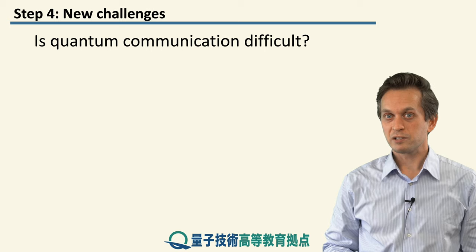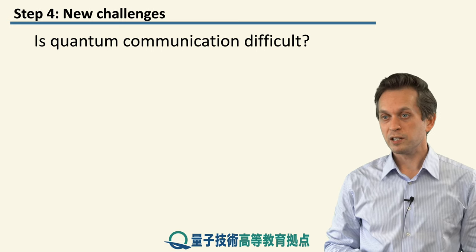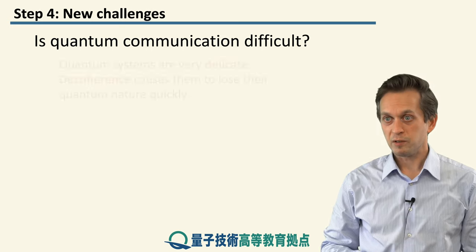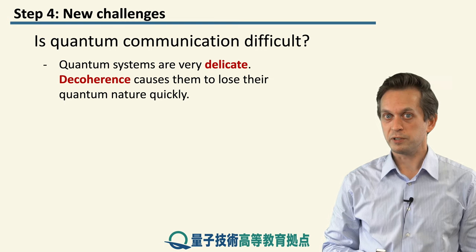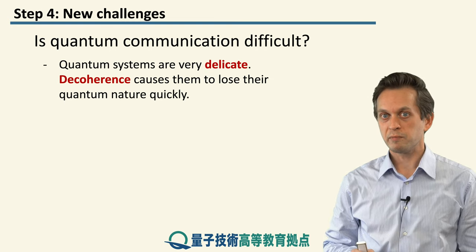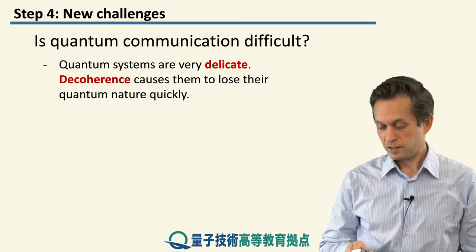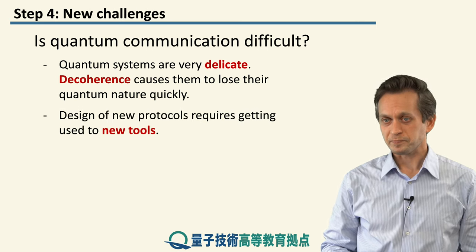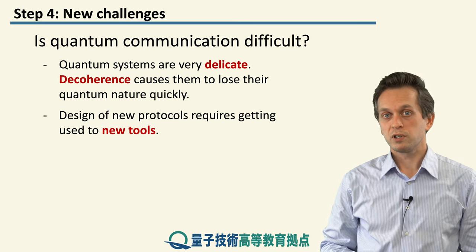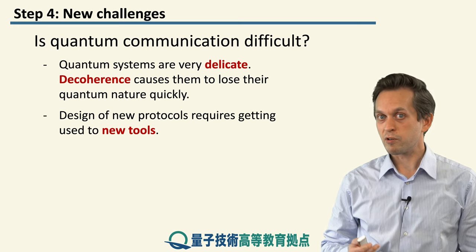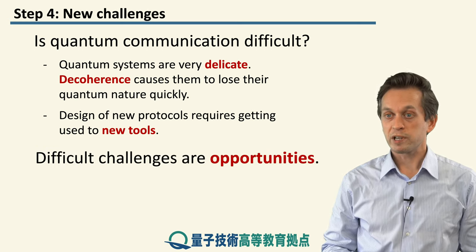So, is quantum communication difficult? As I said, quantum mechanics has some counterintuitive predictions. Not only that, but it's also very difficult to implement, because quantum systems are very delicate and fragile — they very easily decohere, which means they lose their quantum properties. They go from being true and false at the same time to being only true, or only false; basically, they just become classical bits. But at the same time, conceptually, designing new protocols for processing and communication requires new tools and a completely new framework of mind for how we approach and solve problems. So these challenges are more like opportunities.